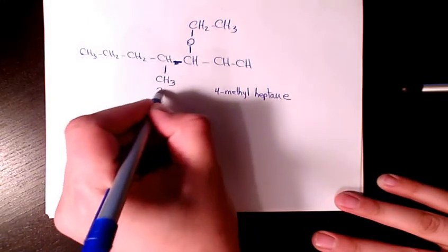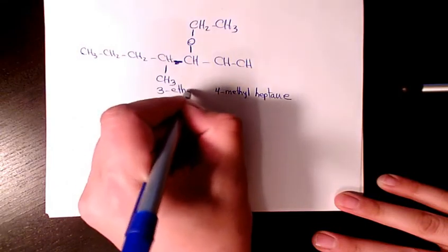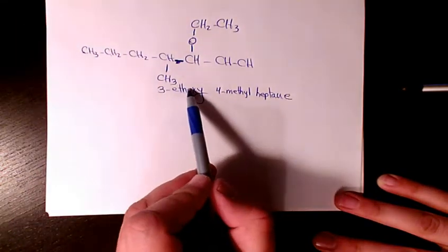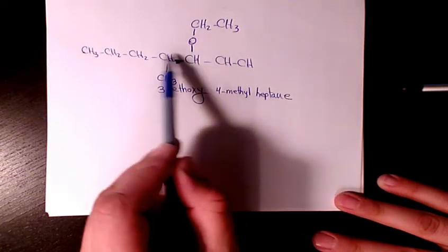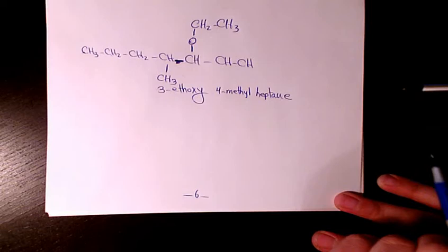So we have 3-ethoxy, 4-methylheptane, because we have seven of these carbons here.